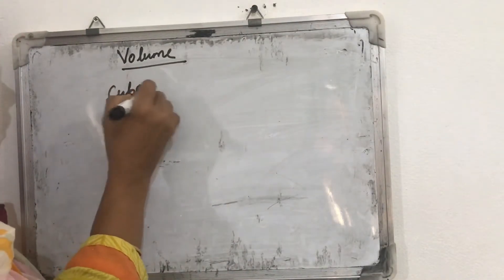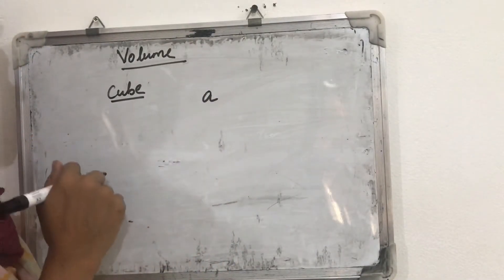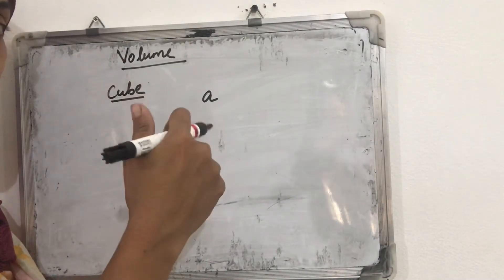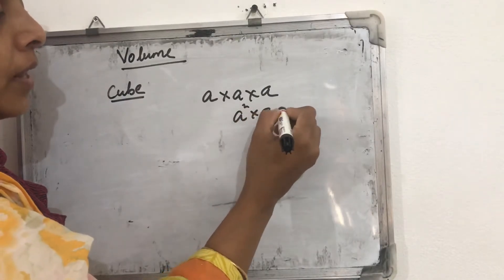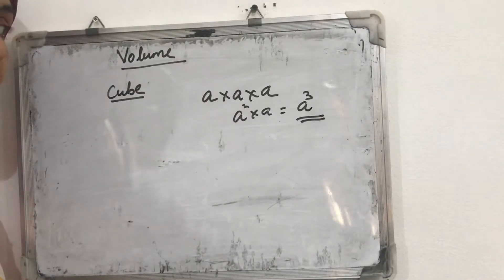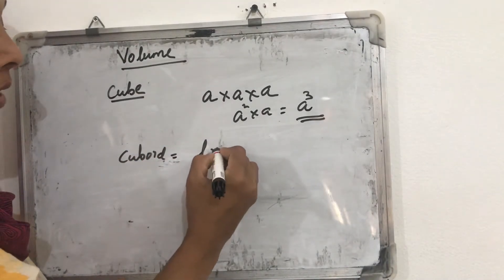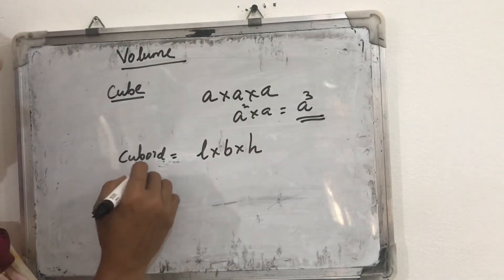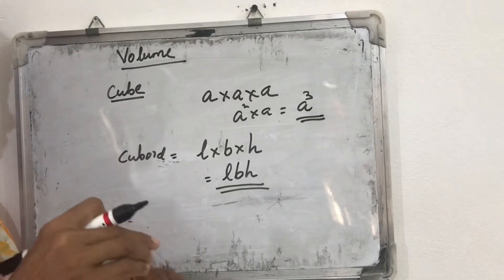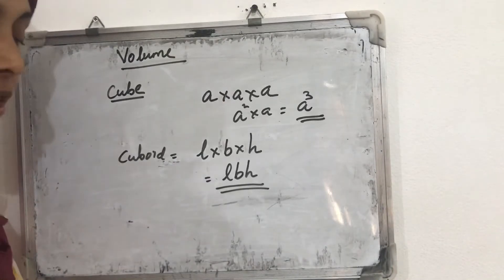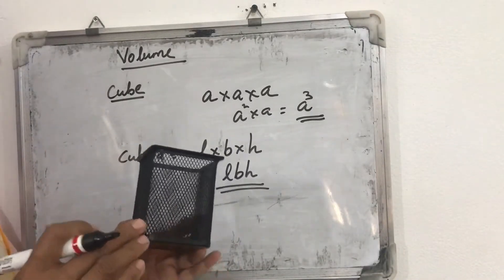For a cube, we take the side length as 'a'. Volume = length × breadth × height = a × a × a = a³. So volume of a cube = a³. For a cuboid, we take length as l, breadth as b, and height as h, so volume of a cuboid = l × b × h = lbh. Generally, for any three-dimensional shape, volume = base area × height.